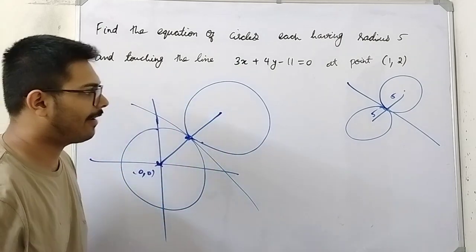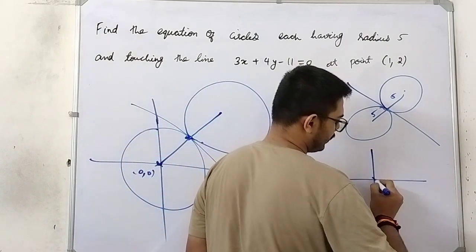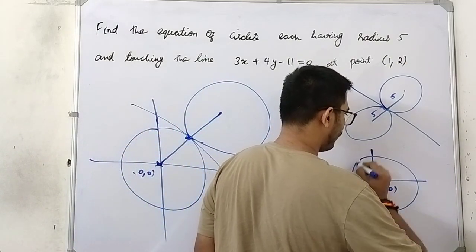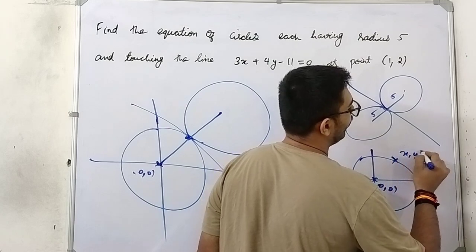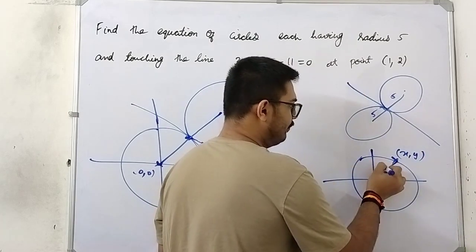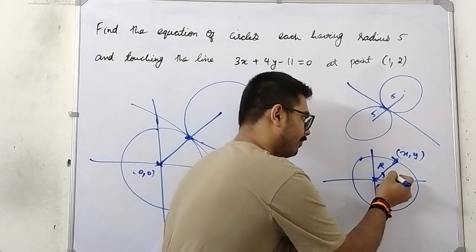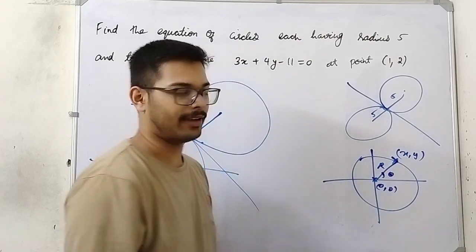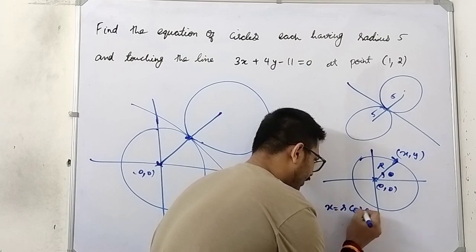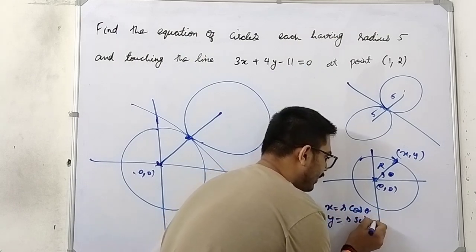Now, if you have a circle with center at the origin, how will you represent a point (x, y) in terms of radius and theta — that is, in parametric form with parameter theta? The x-coordinate will be r·cos θ and the y-coordinate will be r·sin θ.